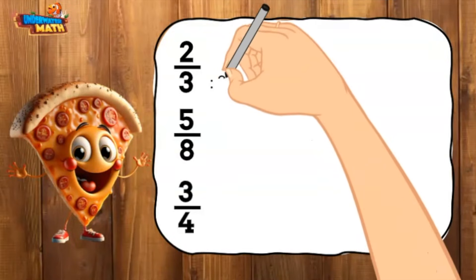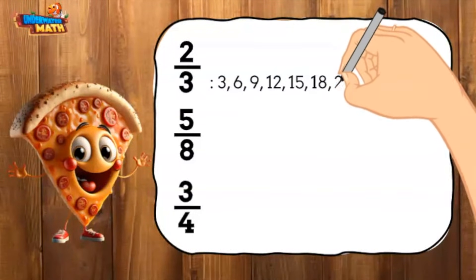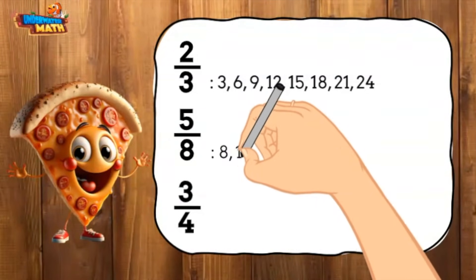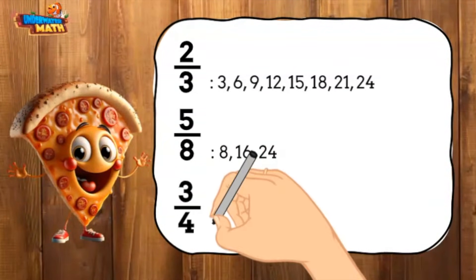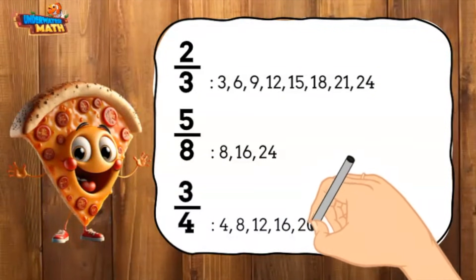The multiples of three are 3, 6, 9, 12, 15, 18, 21, and 24. The multiples of eight are 8, 16, and 24. And the multiples of four are 4, 8, 12, 16, 20, and 24.